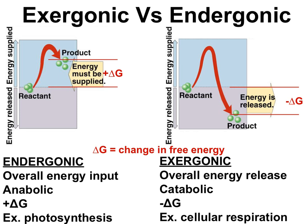In endergonic reactions, there's an overall energy input — energy is put into the reactants so the products have higher free energy. For example, photosynthesis uses energy to stick together carbon dioxide molecules and water to make high-energy sugar. Exergonic reactions have an energy release — energy is released when bonds are broken in a reactant so that products have lower free energy than the reactants. The difference in free energy between reactants and products has a name: delta G — change in free energy.